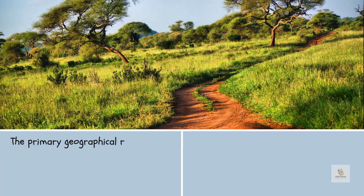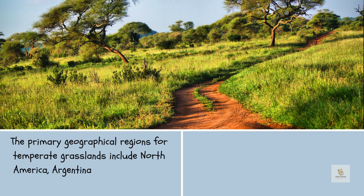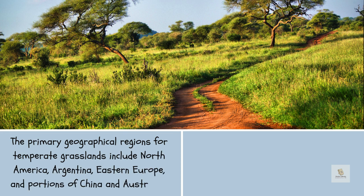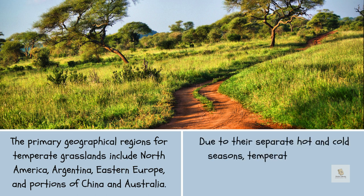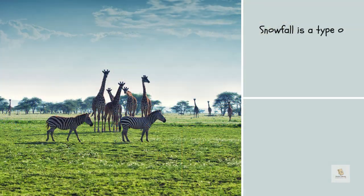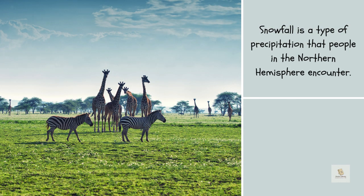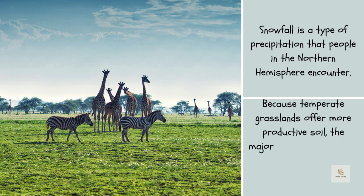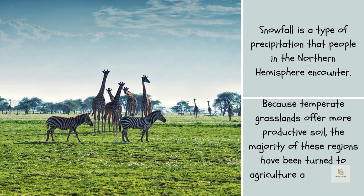The primary geographical regions for temperate grasslands include North America, Argentina, Eastern Europe, and portions of China and Australia. Due to their separate hot and cold seasons, temperate grasslands experience drastically different temperatures than tropical grasslands. Snowfall is a type of precipitation that people in the northern hemisphere encounter. Because temperate grasslands offer more productive soil, the majority of these regions have been turned to agriculture and grazing in the United States.